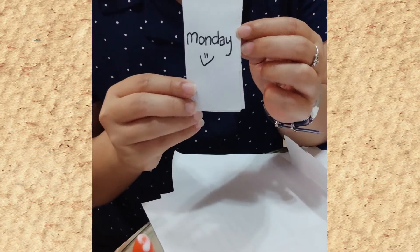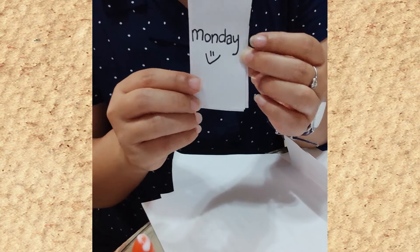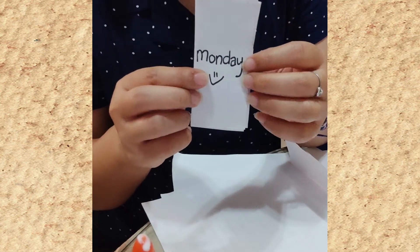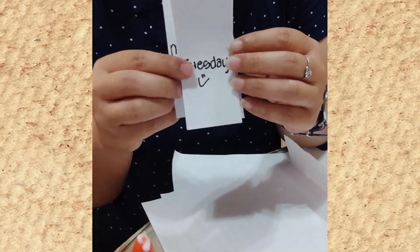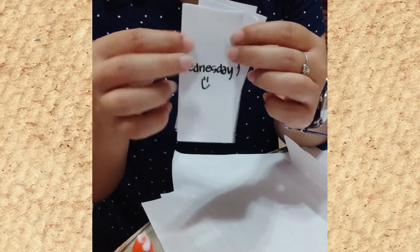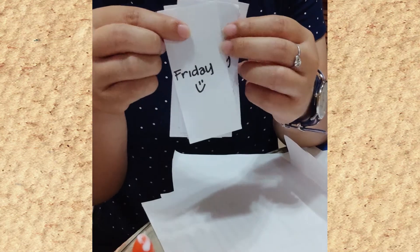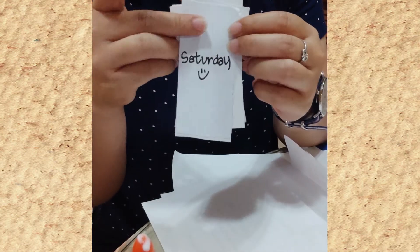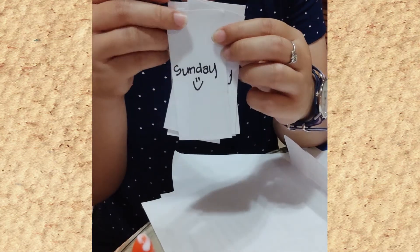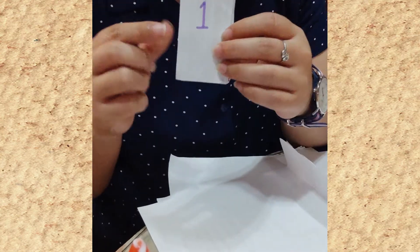Then, write the days of the week. There are 7 days in a week. Write Monday, Tuesday, Wednesday, Thursday, Friday, Saturday, Sunday.